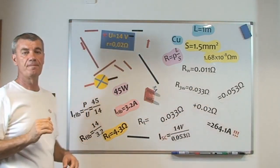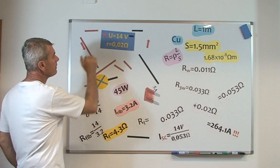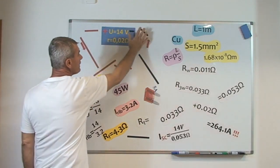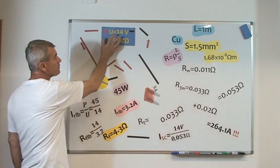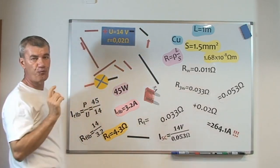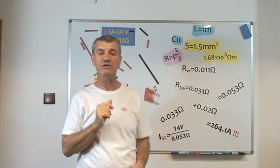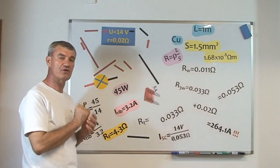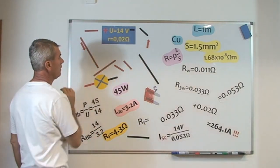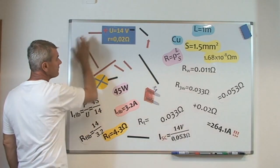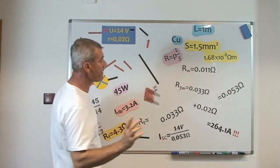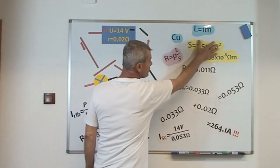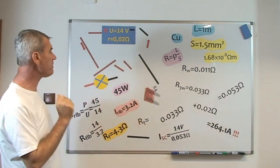I consider a DC circuit, a car circuit, and I have here a charged battery with 14 volts. For a car battery the internal electrical resistance is between 0.01 and 0.02 ohms. I'm fixing two wires, a couple wires with length of one meter and section of 1.5 square millimeters.